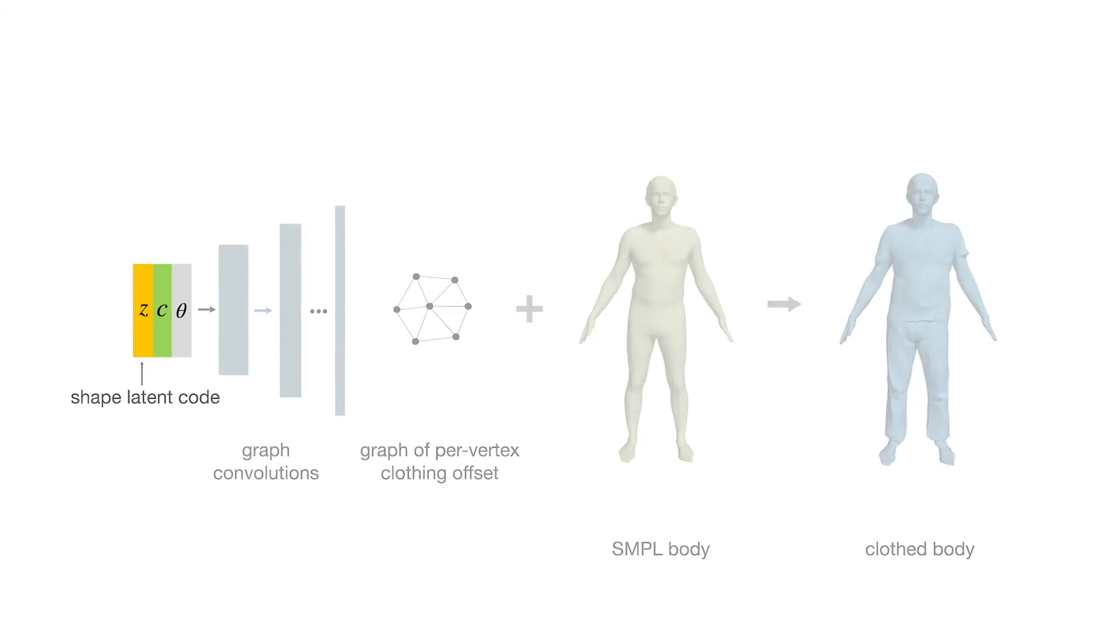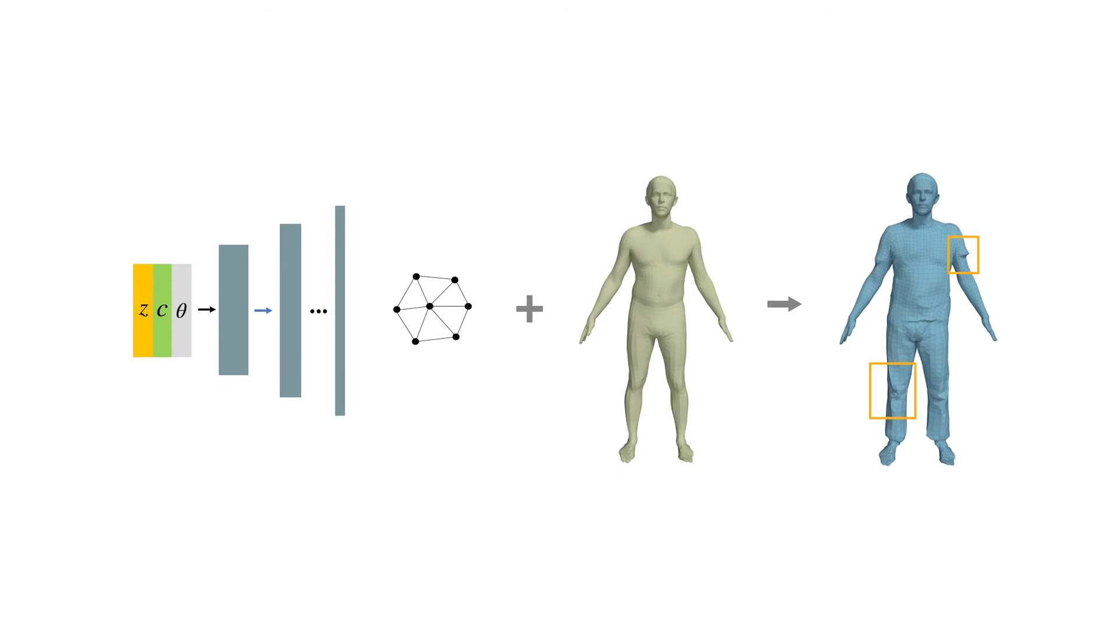Given a body pose, garment type, and a random sample from the learned latent space, our model produces a clothing offset layer on top of the SMPL body model. The generated garment is globally coherent and preserves local wrinkles.